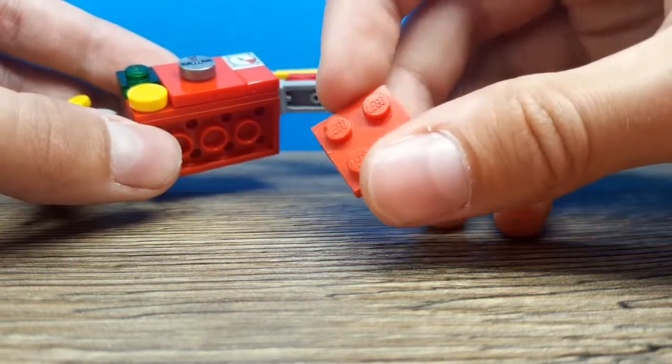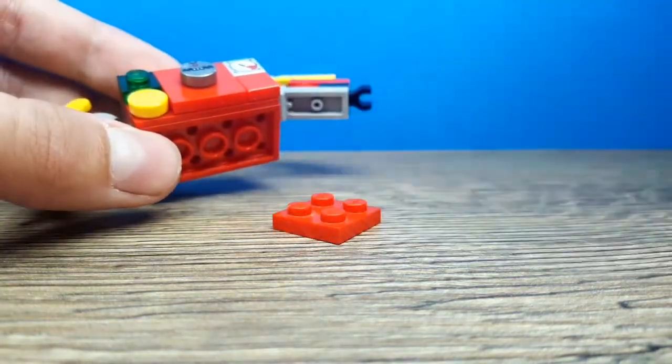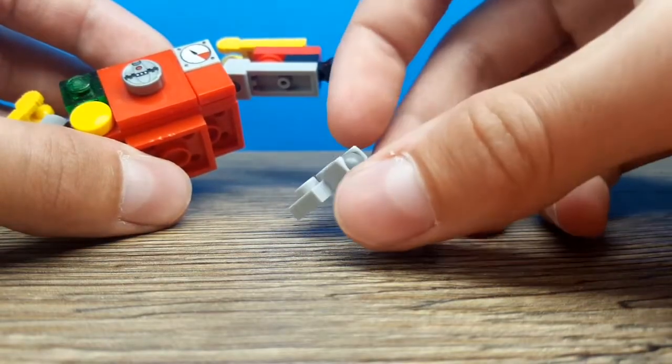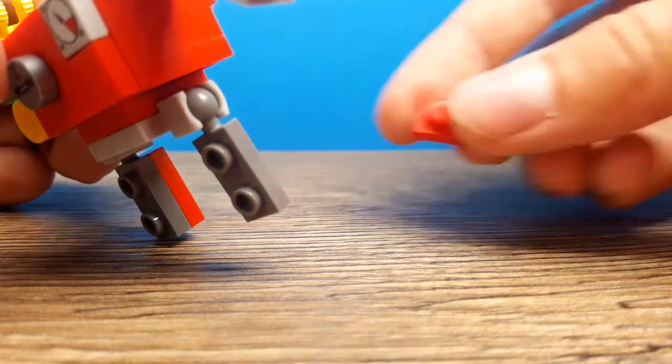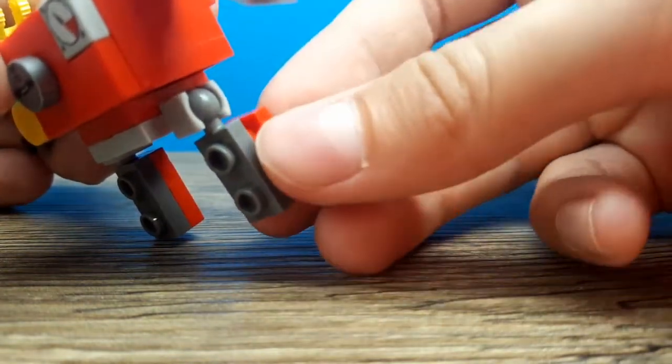Underneath in the middle put a 2x2 plate. Add these 2 pieces as legs. And then at the back put a plate on either leg.